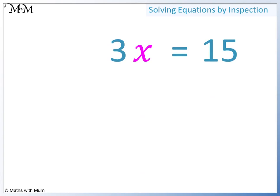3x equals 15. This means 3 times x equals 15. We look for a number that when we multiply it by 3 we get 15. 3 times 5 equals 15. So x equals 5.